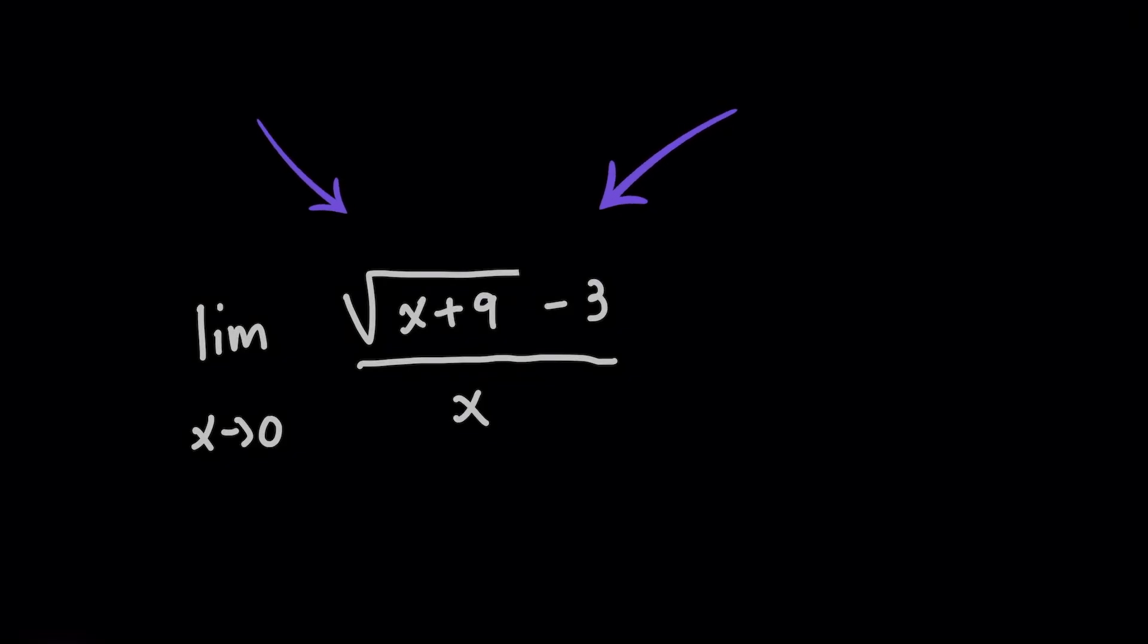This square root and minus sign are going to be key for learning the conjugate method here in just a few minutes. Now the reason why I'm using the conjugate method here is because if I plug in this value zero, you'll notice that you'll end up dividing by zero, which isn't allowed.